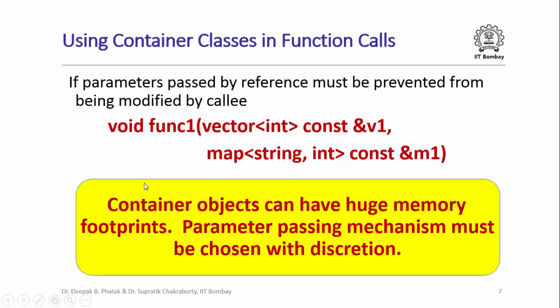The bottom line is that container objects can have huge memory footprints. When passing container objects as parameters to functions, you need to choose the parameter passing mechanism with discretion. If your container objects are always going to be small, then you can pass them by value. But otherwise, it is always preferable to pass them by reference.